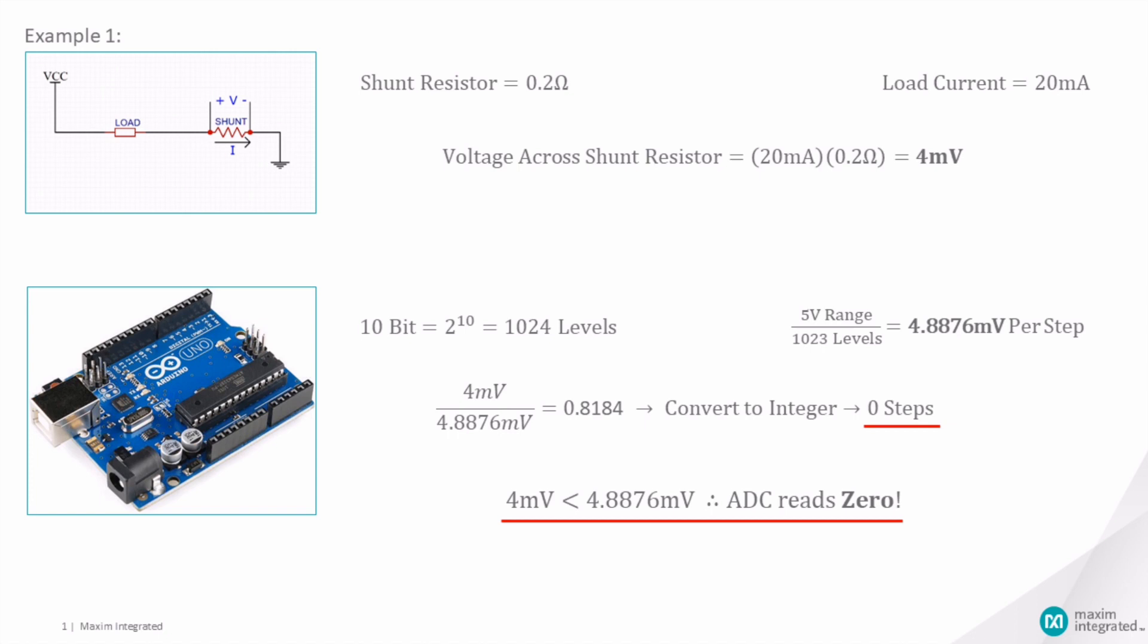Since the voltage across the resistor is 0.88 millivolts less than one step of the ADC, the voltage seen by the Arduino is zero.